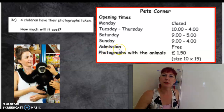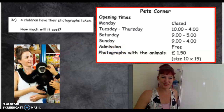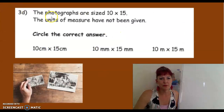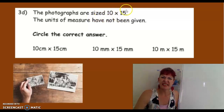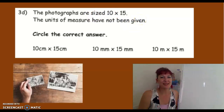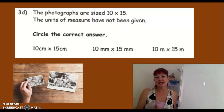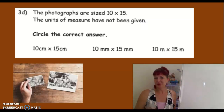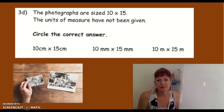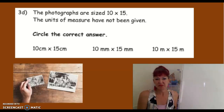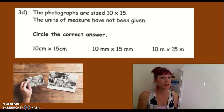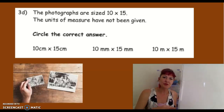What does admission mean? Entry — well done. One more question. The photographs are size 10 times 15 — sometimes that means 'by', so 10 by 15. You must have seen that when they're talking about the size of a telly or a desk — that's usually the length by the width. The units of measurement have not been given. 10 by 15 tells me nothing at all. If I was running a business, I would not order from that because it would be risky.